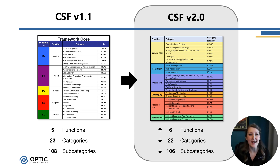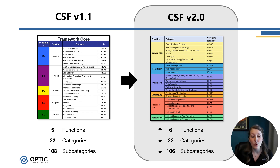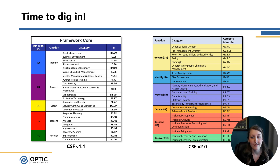As we start to get into the weeds, I want to do a high-level overview of what the changes are. Looking left to right at CSF 1.1 versus version 2.0, we have an increased function count — a new function called Govern — going from five to six. At the category level we've lost one, going from 23 categories to 22. At the subcategory level there was also a decrease, going from 108 subcategories to 106.